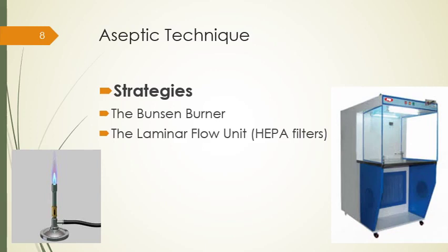A Bunsen burner is not practical in some situations, like within a laminar flow unit where the heat will disrupt air flow. A micro burner may be used as an alternative in the laminar flow unit. This micro burner consists of a circular heating element, and placing an inoculating loop or needle within the ring will quickly heat and sterilize the loop.